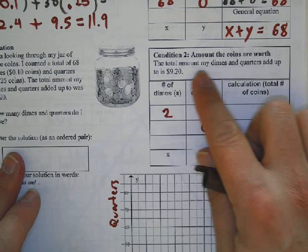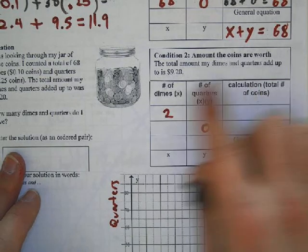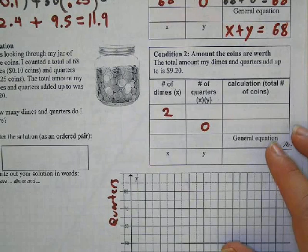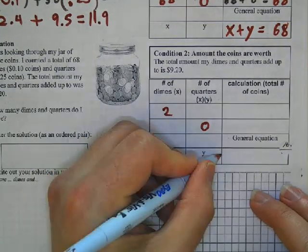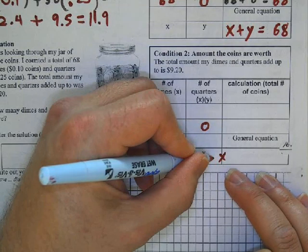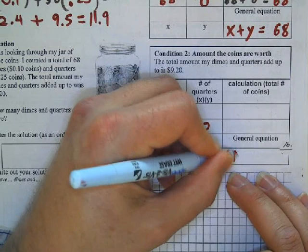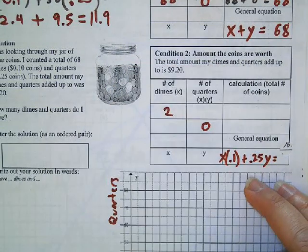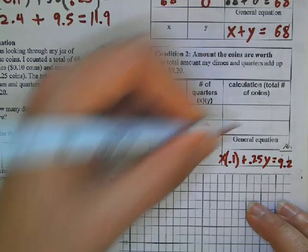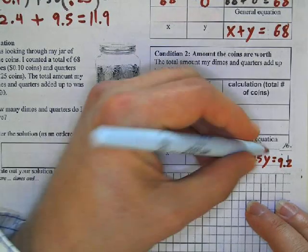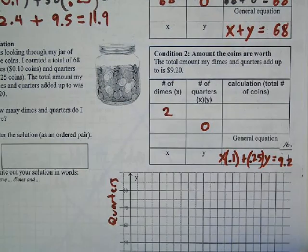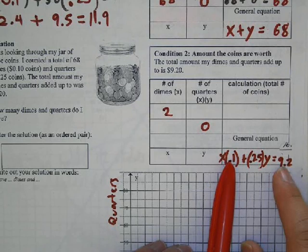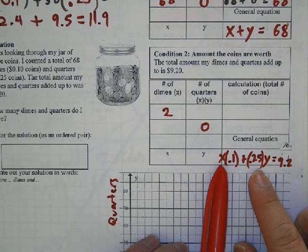Now the total amount of my dimes and quarters added up costs nine dollars and twenty cents. This was the harder part to figure out. I know that x is the number of dimes I've got, and it's going to be times 0.1, and the quarters, it's going to be 0.25 times y, and that adds up to 9.20. So be careful what you've written here. Some people were forgetting to write the y, they forgot to write the equal sign.